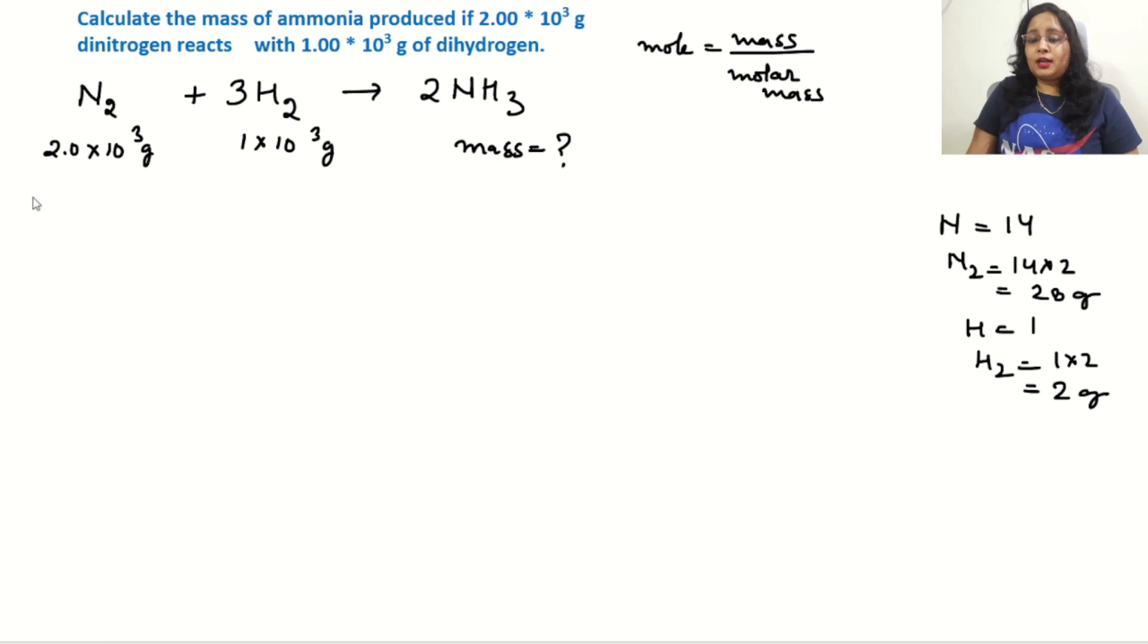Now let's calculate the number of moles. For nitrogen: mass divided by molar mass equals 2.0 × 10³ divided by 28, which gives 71.43 moles.